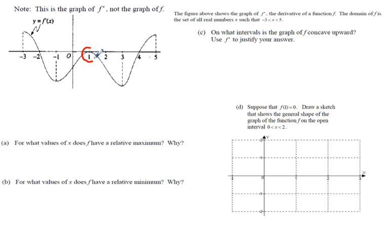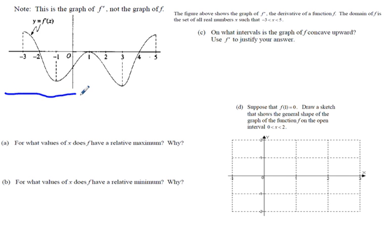A relative maximum is a point on the curve to the left of which the values are greater, and to the right of which the values are less. The problem is that this is a graph of f' of x, not of f. So I tell my students that number lines are their friends, and we're going to draw a number line to conceptually understand what's going on.